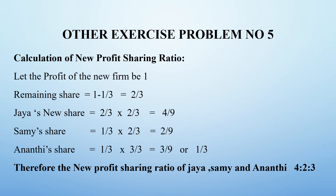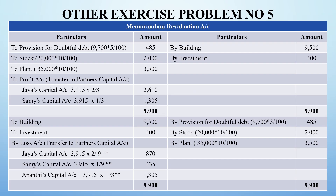After finding the new profit sharing ratio, we prepare the memorandum revaluation account. For plant, 35,000 rupees with 10% reduction goes to the debit side. A provision of 5% was to be created for doubtful debts. Provision means we hold a profit amount to balance bad debts. On 9,700 rupees at 5%, that is 485 rupees.